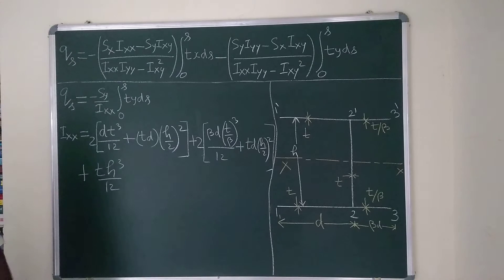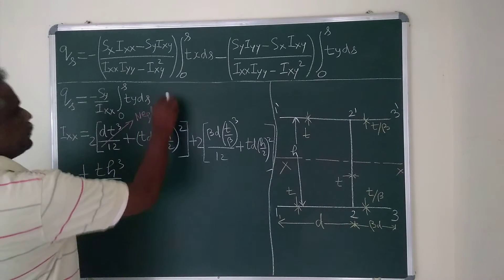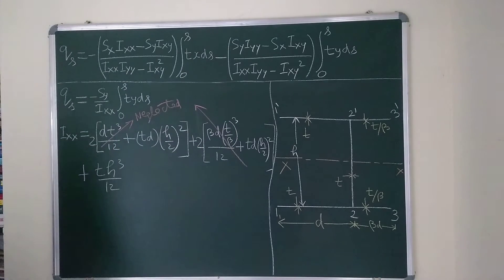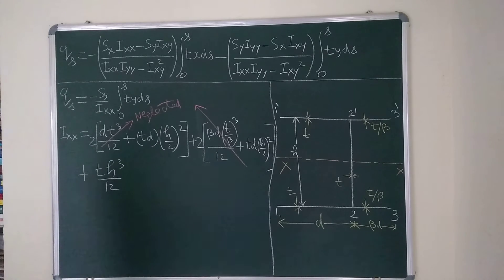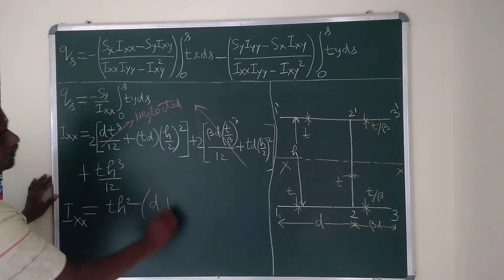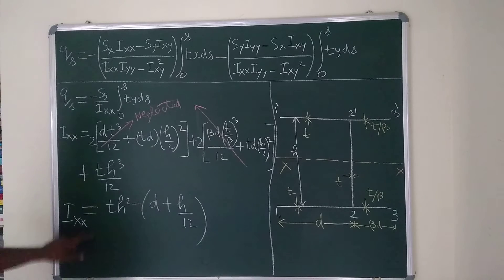Since T is small, higher powers of T such as T³ and T·H³/12 can be neglected. After simplification, IXX = T·H²·(D + H/12).